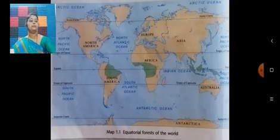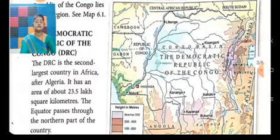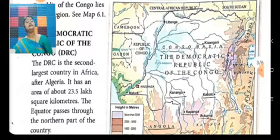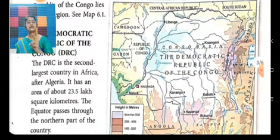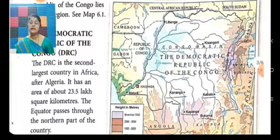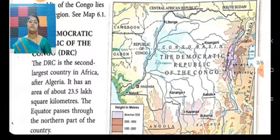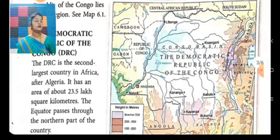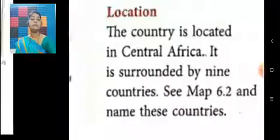The Democratic Republic of Congo lies in this region. Now let us talk about the DRC, or the Democratic Republic of Congo. The DRC is the second largest country in Africa — after Algeria. It has an area of about 23.5 lakh square kilometers. The equator passes through the northern part of the country.